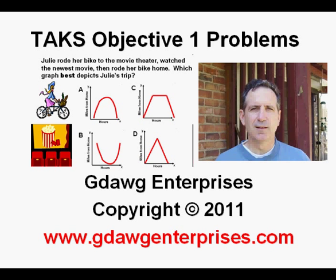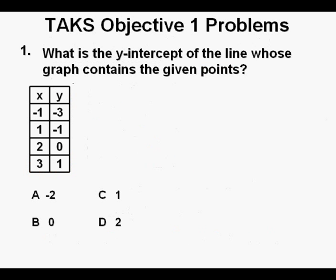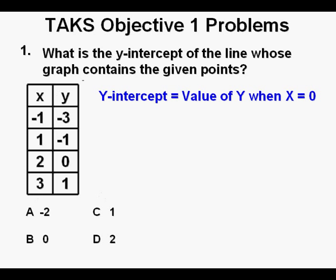TAKS Objective 1 Problems. Problem 1: What is the y-intercept of the line whose graph contains the given points? You should remember that the y-intercept is the value of y when x equals 0. However, do we see x equals 0 here where we would expect to find it between negative 1 and 1? No, there is no x equals 0.